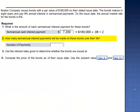Requirement 2. How many semi-annual interest payments will be made on these bonds over their life? There will be 2 payments per year for 8 years, 16 payments.